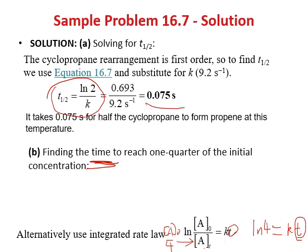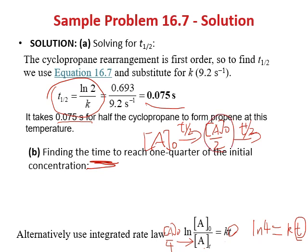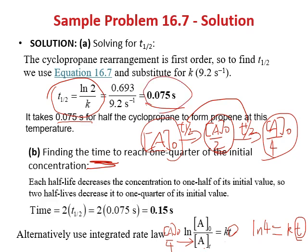An easier approach: one half-life brings the concentration to A0/2, and a second half-life brings it to A0/4. So two half-lives are needed. Time = 2 × 0.075 = 0.15 seconds. In general, whenever you want to find time for a certain concentration, think about the integrated rate law.